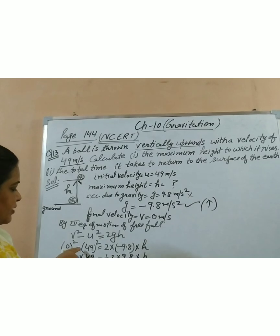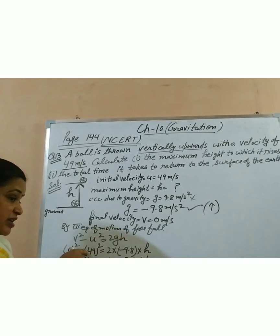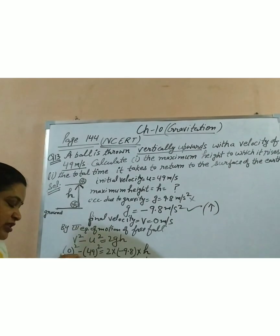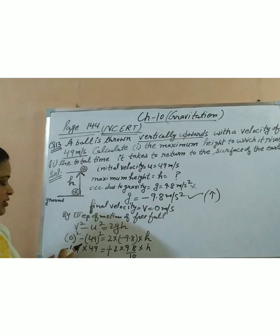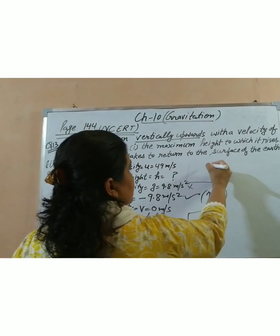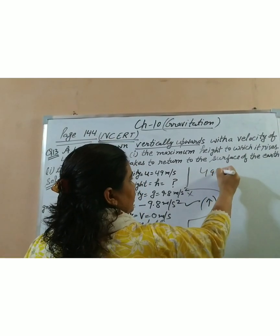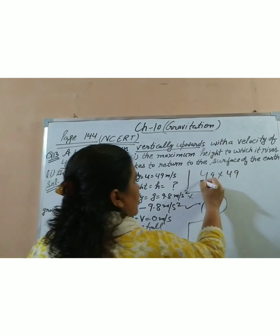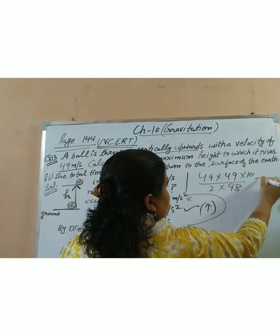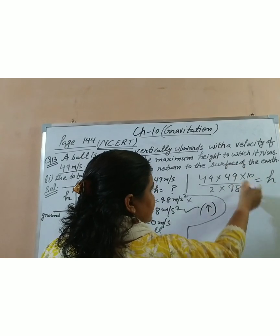Note that the minus sign remains because 49 is outside the bracket — if it were minus 49 inside the bracket it would become positive, but here it stays minus. So minus and minus cancel on both sides, giving us 49 × 49 divided by 2 × 98, which equals H. The decimal multiplies out as we simplify.